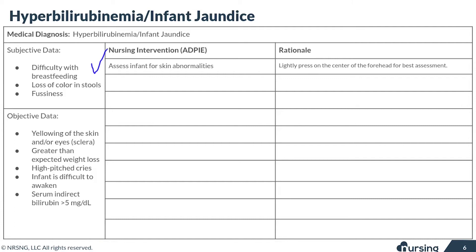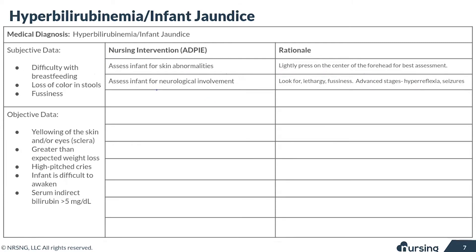Your first intervention is to assess the infant's skin for abnormalities — really what we mean is we're looking for yellowing of the skin. The best way to do this is to lightly press on the center of the forehead and see what the color of the skin is when you do that. It's also really important to check the eyes. Continuing on with your assessment, you always want to be on the lookout for signs that this is causing any brain damage — so this is really all about a neuro assessment.